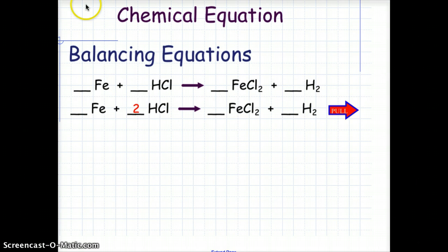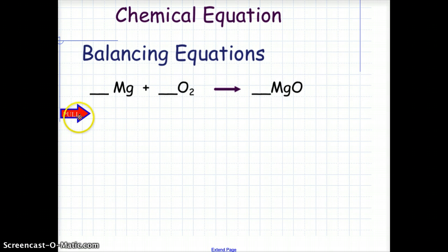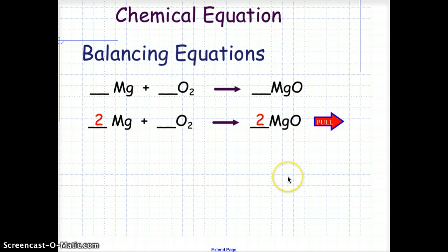Let's look at another sample problem. Here we have magnesium combining with oxygen gas to produce magnesium oxide. Go ahead and try this on your own — turn off the video, and when you have a balanced chemical equation, turn the video back on. To balance this, we place a 2 in front of the magnesium and a 2 in front of the magnesium oxide. This gives us 2 magnesium and 2 oxygen on the reactant side, and with 2 MgO, we have 2 magnesiums and 2 oxygens on the product side. We now have a balanced equation.